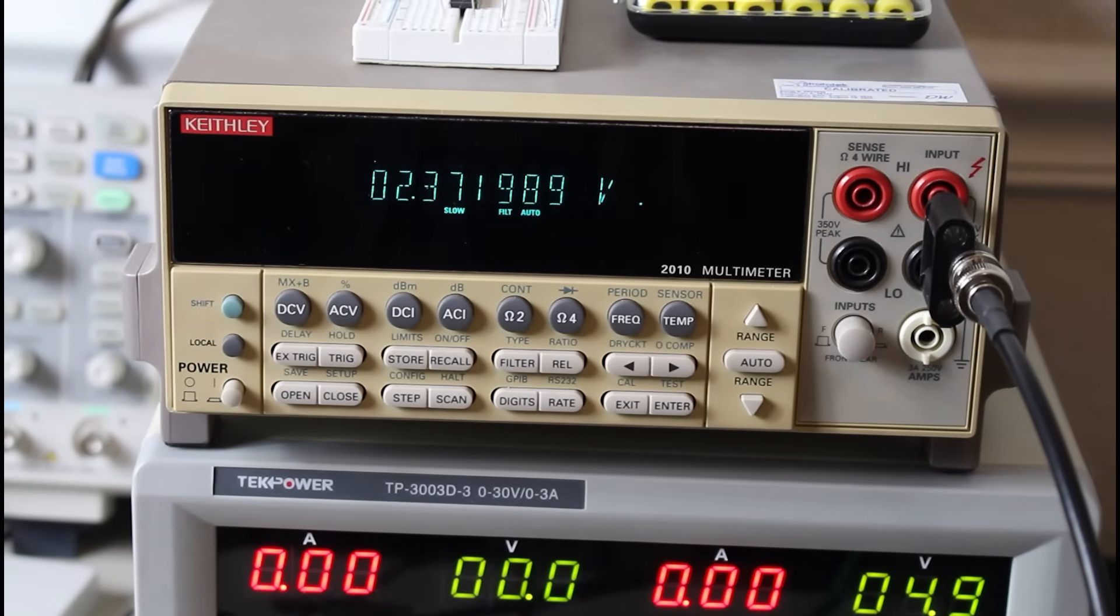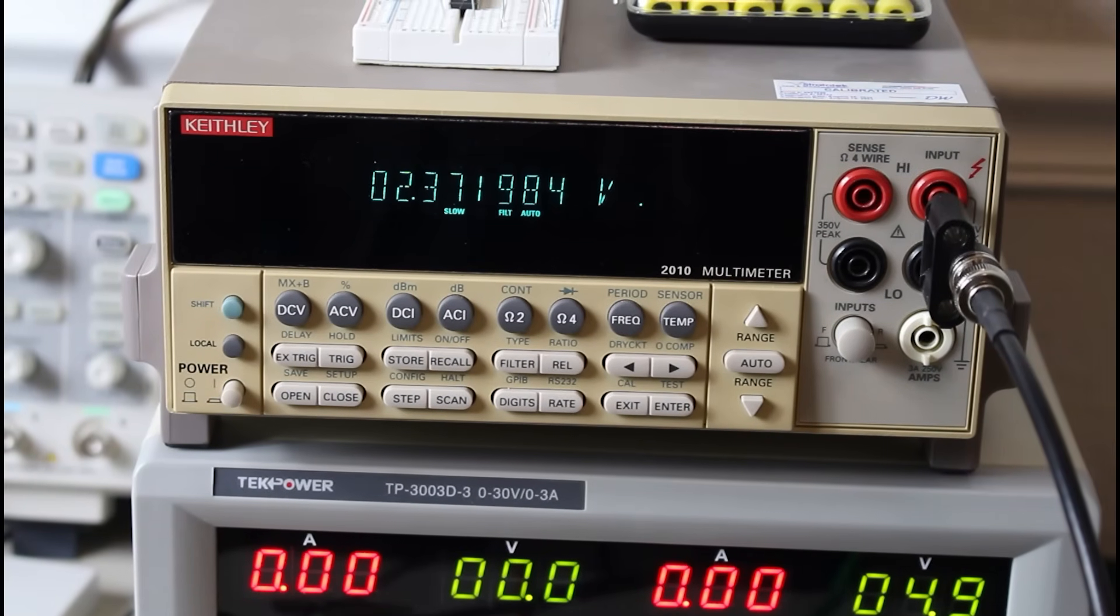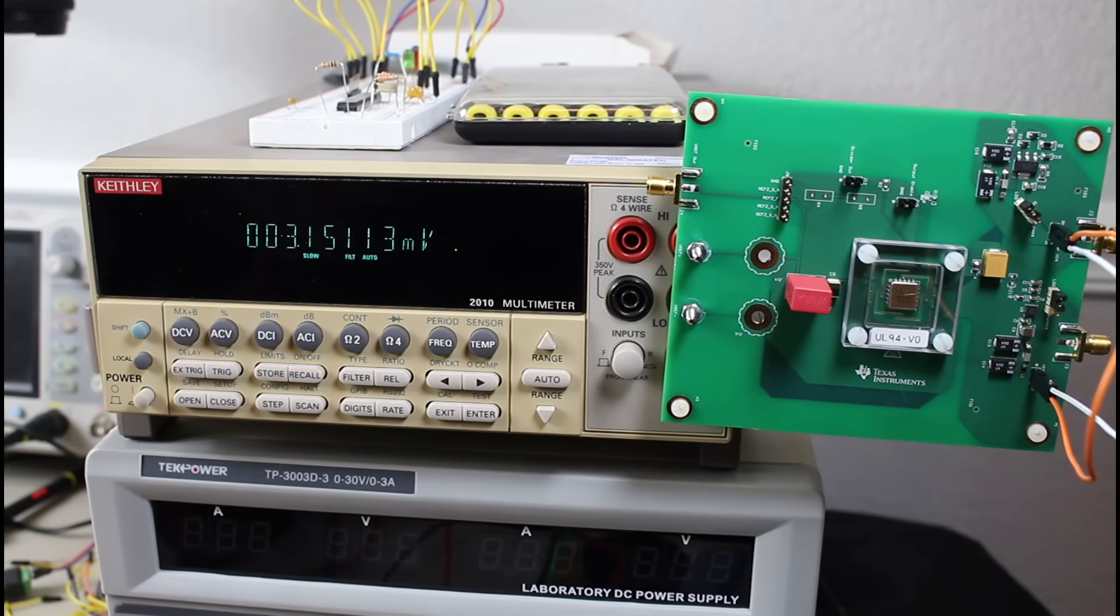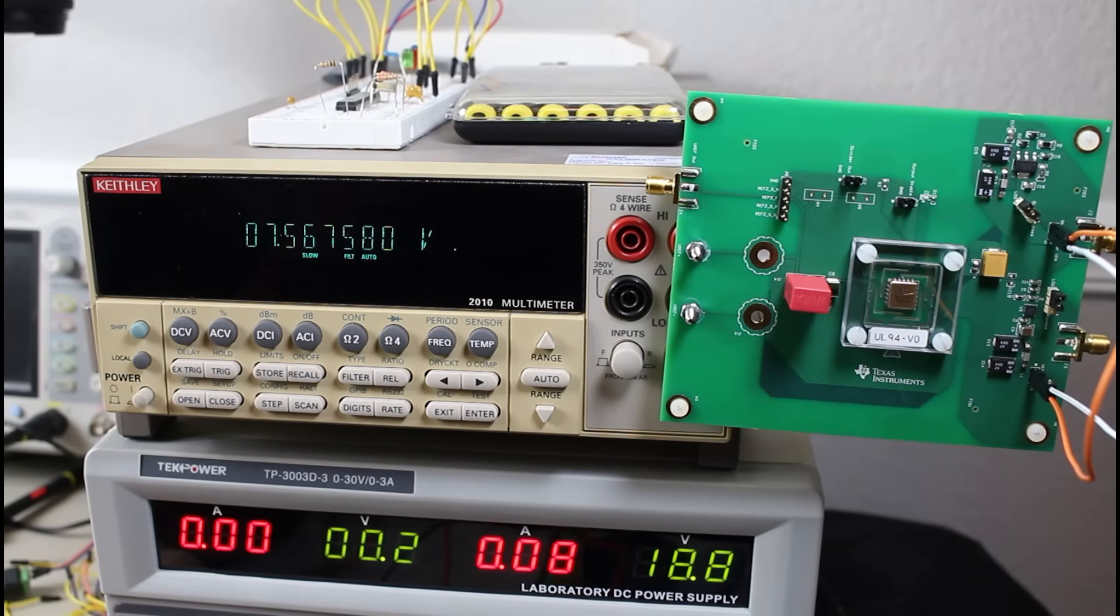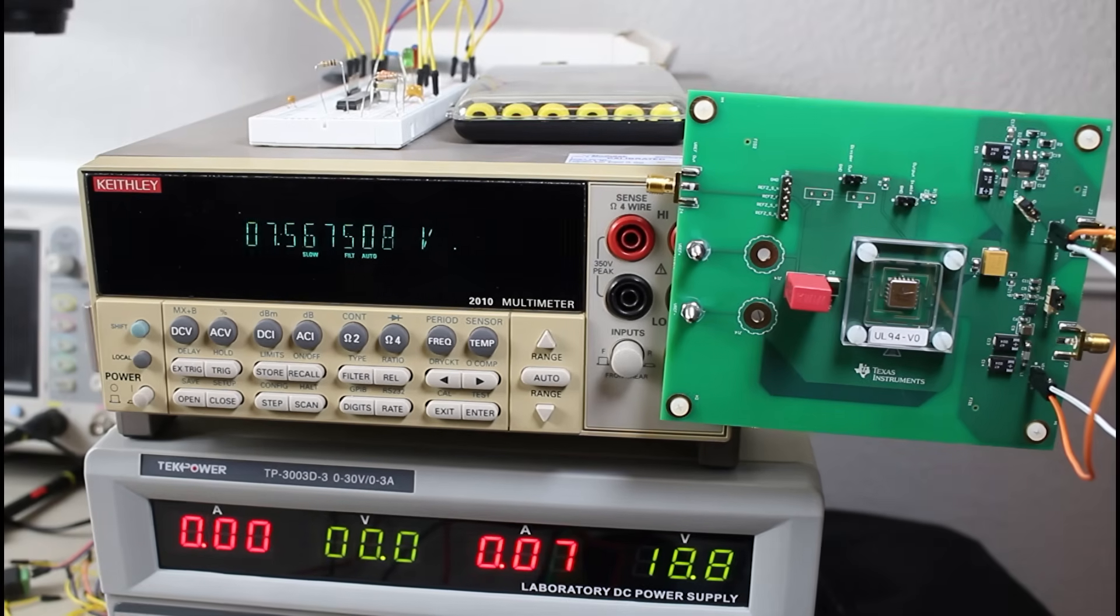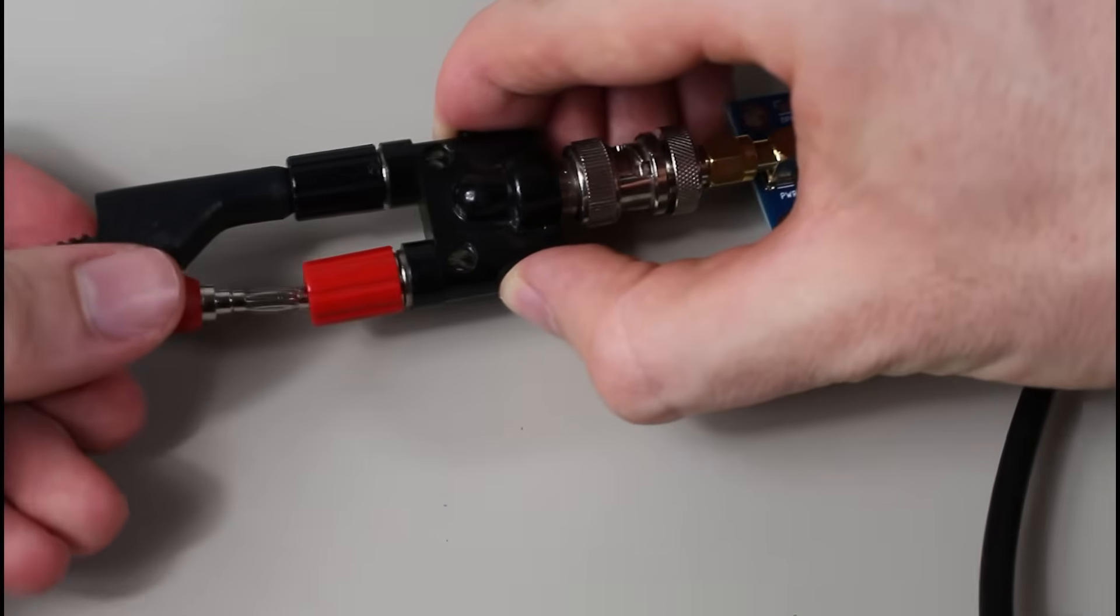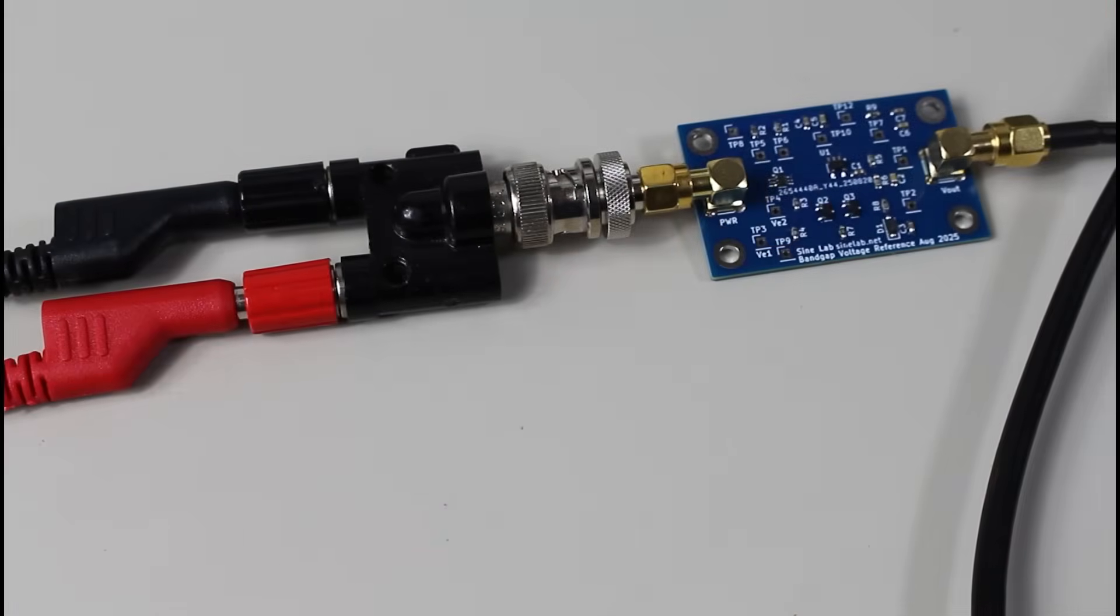Whether you realize it or not, DC voltage references are a very important part of a large majority of electronics projects. A DC voltage reference is basically a device that, ideally, gives you an exact DC voltage regardless of input voltage. It should also ideally be immune to noise from all sources. In other words, it's really just a device that gives you an ideal, exact voltage under any circumstances.